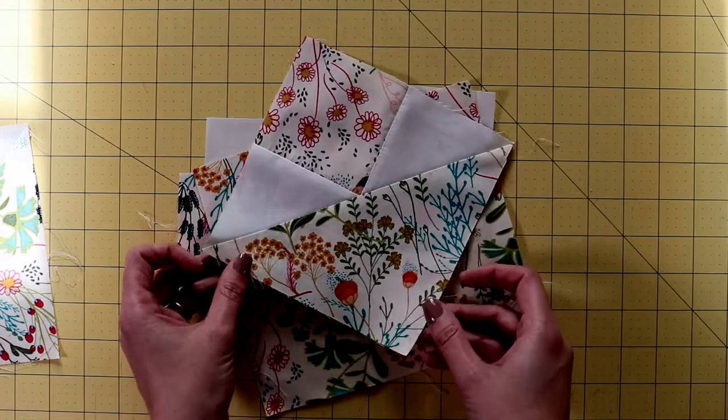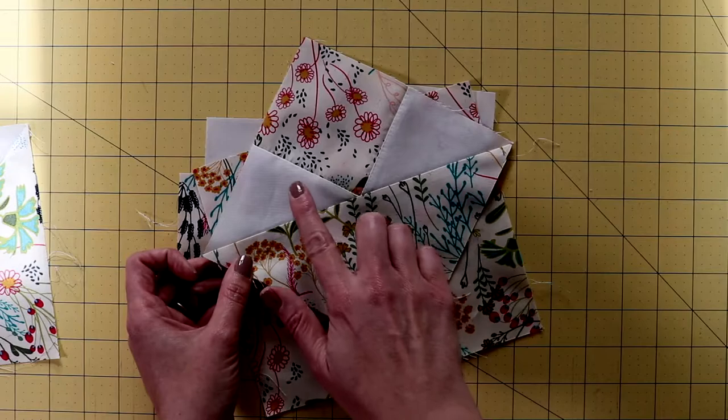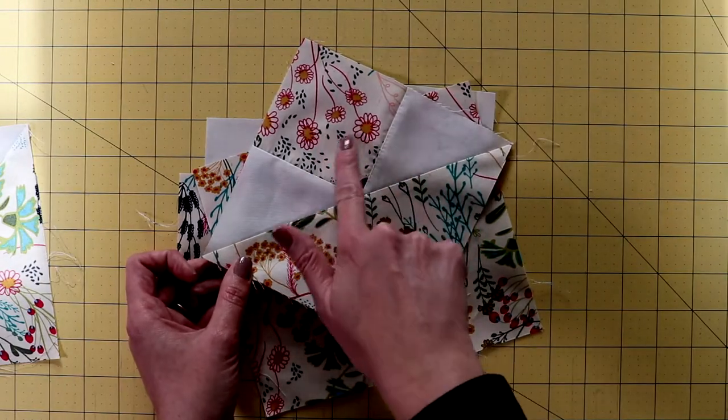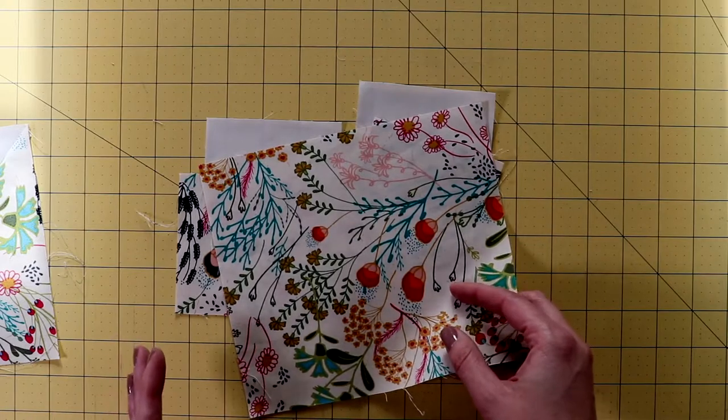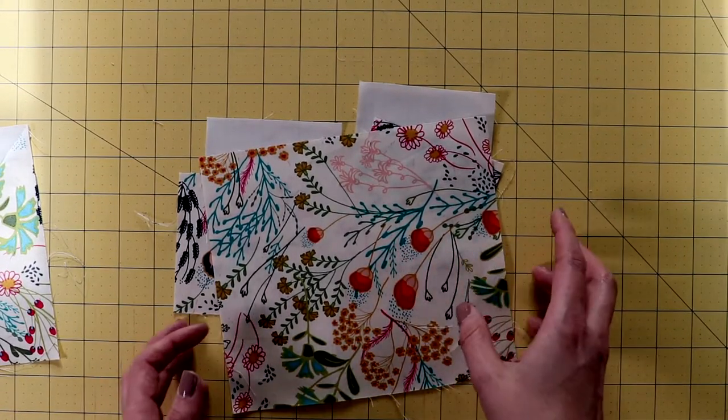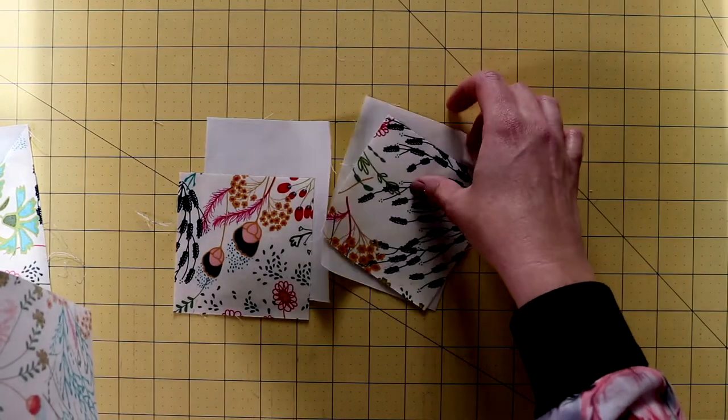So when you look at the finished block, this ends up being the larger piece. These are the 2 rectangles, and then this is your square piece. So when you're done actually with this one block, it will end up turning 2. So you kind of get 2 for 1 with this.